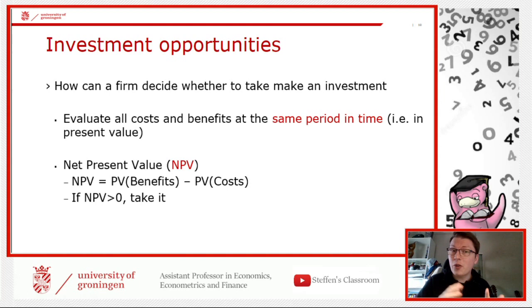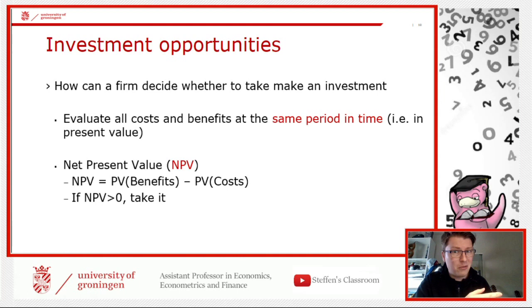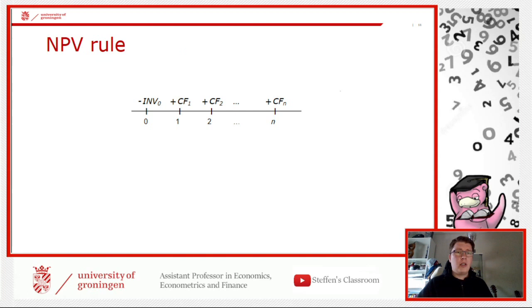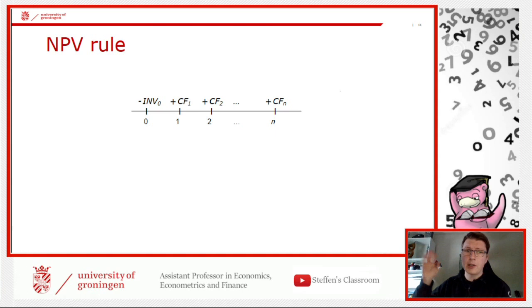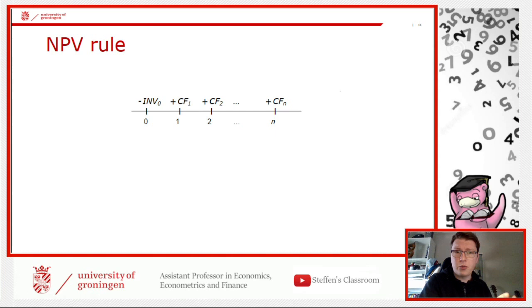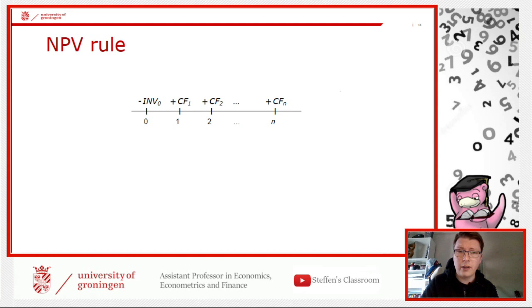That is the short version of the NPV rule. Of course there is a lot behind it — where does NPV come from, are there other tools? The answer is yes. Looking at a timeline: at time zero you have an investment, a cash outflow with a negative sign, and in years one, two, through N you have cash inflows — your benefits — which materialize in the future with positive signs.